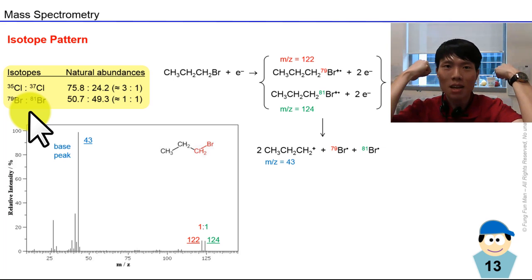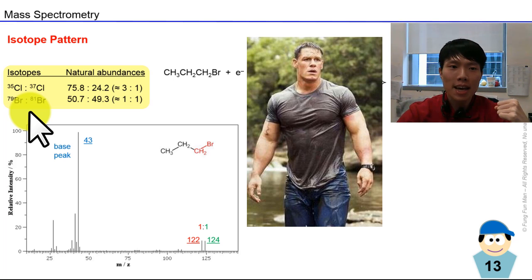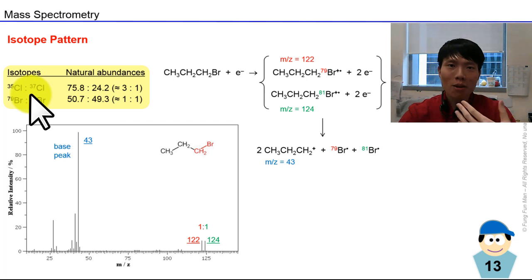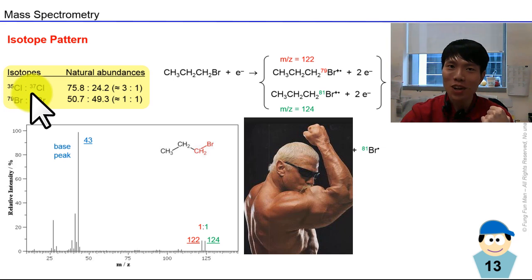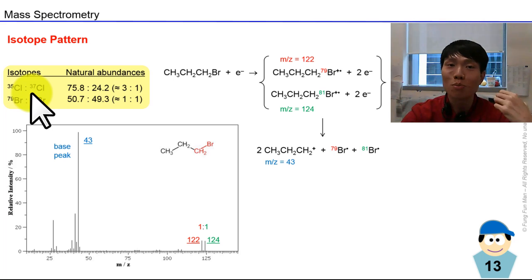You can think of it like having two biceps. For chlorine, it's like a person who keeps training one arm, so chlorine-35 is the bigger bicep - uneven bicep size. But for bromine, it's even, both equally strong.